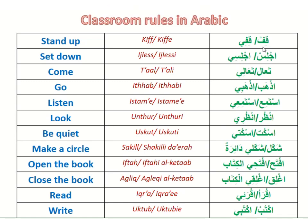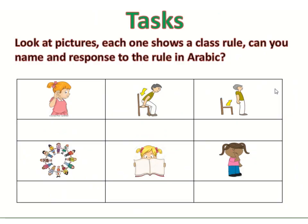This is the list of vocabulary in Arabic along with pronunciation and English meanings — refer to it anytime you wish. Now for the task: look at the pictures — each one shows a classroom rule. Can you name and respond to the rule in Arabic? For example, for boys say Qif, and for girls say Qifi. This is the end of the lesson. Hopefully you enjoyed it. You can practice this task with a family member or your class teacher. See you inshallah next week with another lesson.